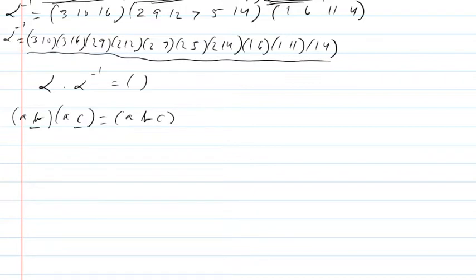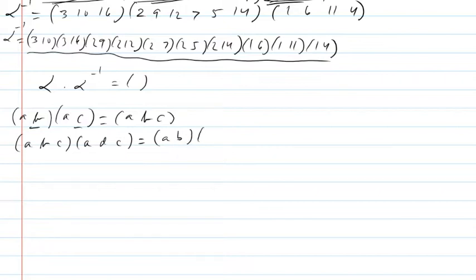Also, if you have two 3-cycles that have the same first and third number, and you do the composition, you end up with something like (A, B, C, D) — the first 3-cycle contributes the first and second elements, and the second 3-cycle contributes the first and second numbers.